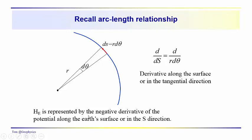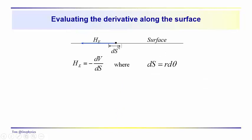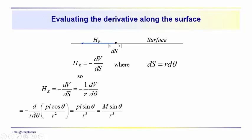We need to calculate the negative derivative from the potential. We know what the potential is; we want to evaluate the derivative with respect to a differential step out along the surface, where ds equals R d theta. So the horizontal component of the Earth's magnetic field intensity — or the dipole field — would be: minus dV/ds equals minus 1 over R times dV/d theta. Evaluating that, the horizontal magnetic field intensity would be equal to the dipole moment times the sine of theta over R cubed.